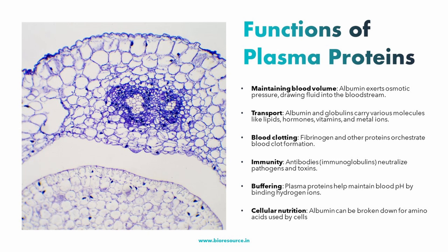The second function is transportation. Plasma proteins act like molecular taxis, carrying essential substances throughout the body that cannot travel freely on their own. For example, they carry lipids like cholesterol and triglycerides using special vehicles called lipoproteins. Specific globulins transport hormones, ensuring they reach their target organs to regulate various functions. Even vitamins and metal ions take a ride on these transporters.